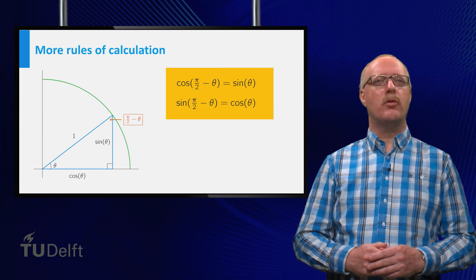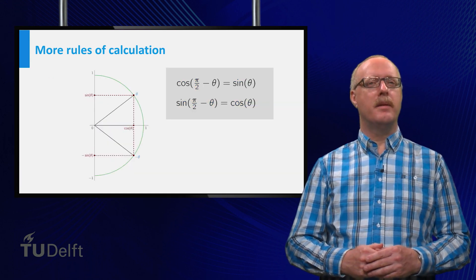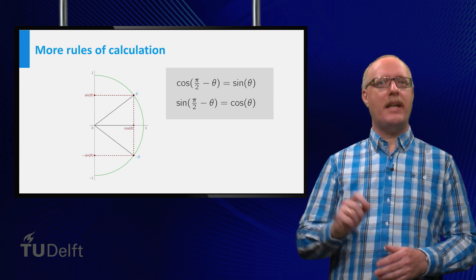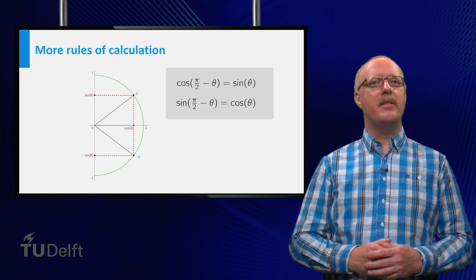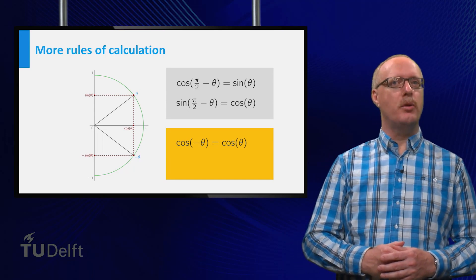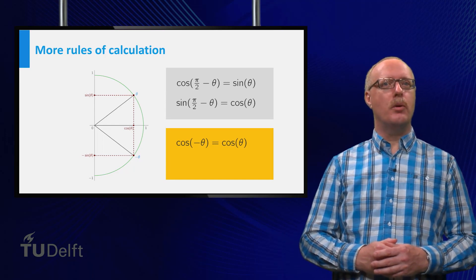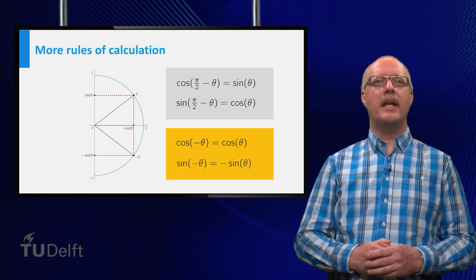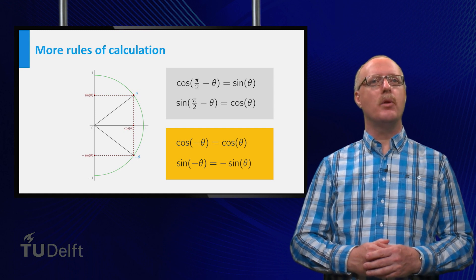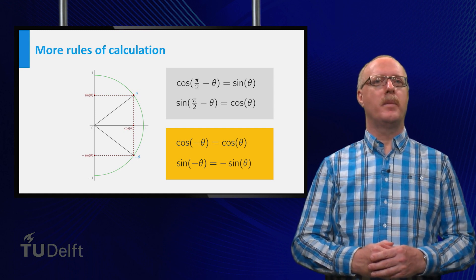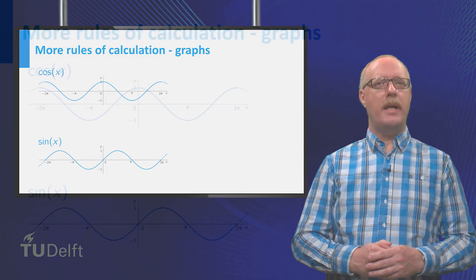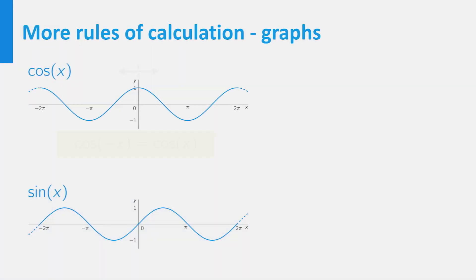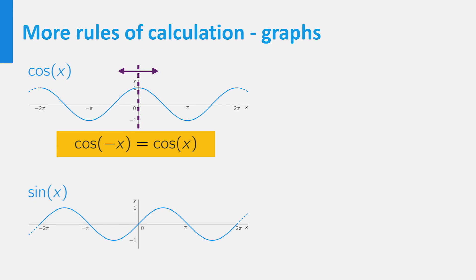Back to the unit circle — consider the angle theta. Reflections in the horizontal axis show that the cosine is an even function, which means that the cosine of minus theta equals the cosine of plus theta, and that the sine is an odd function, which means that the sine of minus theta equals minus the sine of theta. The graph of the cosine is line symmetric in the vertical axis, which shows that the cosine is even, and the graph of the sine is point symmetric in the origin, which shows that the sine is odd.